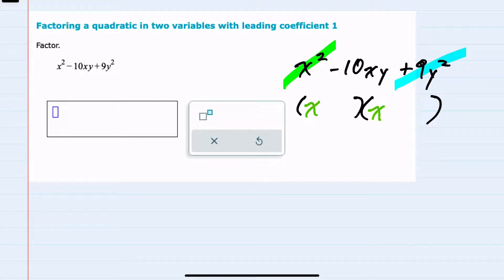And then for the factors of the last term, I see that y squared and my factors of 9y squared would have to be either y and 9y, or 3y and 3y.